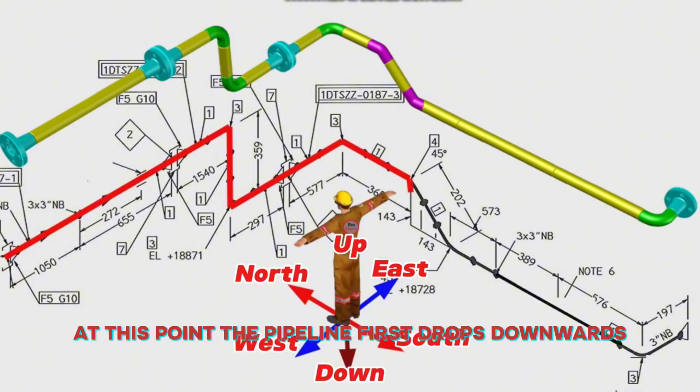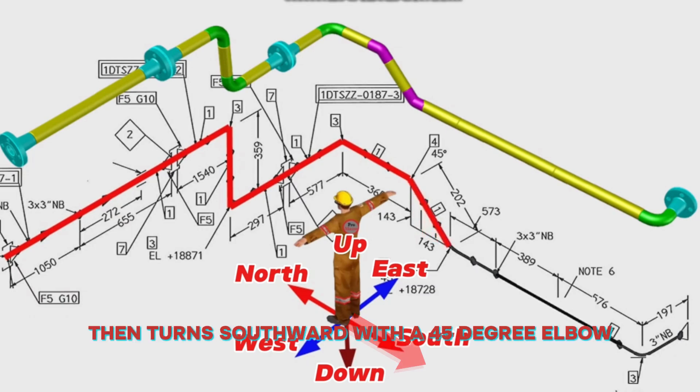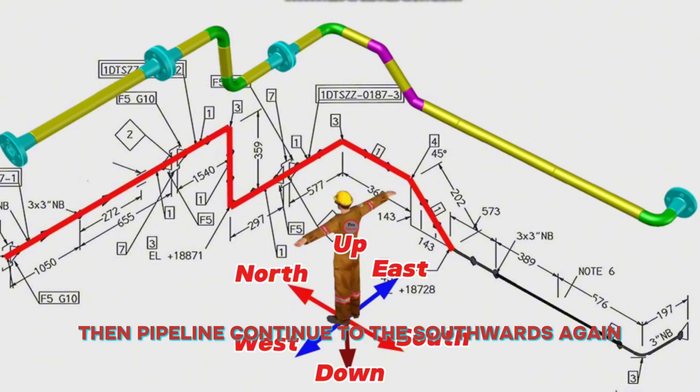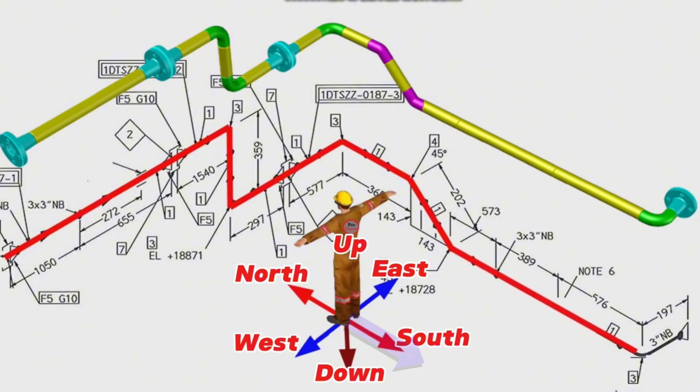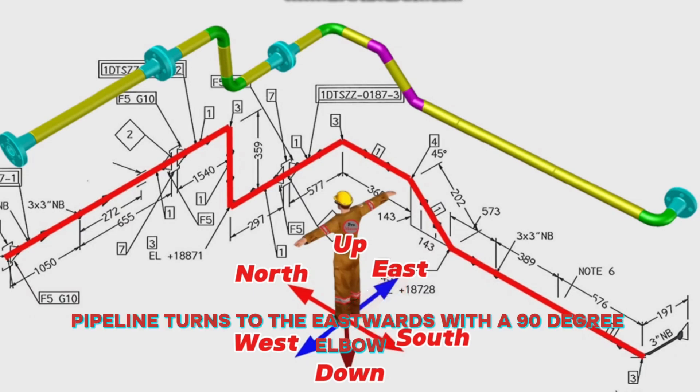At this point, the pipeline first drops downwards with a 45-degree elbow, then turns southward with a 45-degree elbow. Then the pipeline continues to the southwards again. At last, the pipeline turns to the eastwards with a 90-degree elbow.